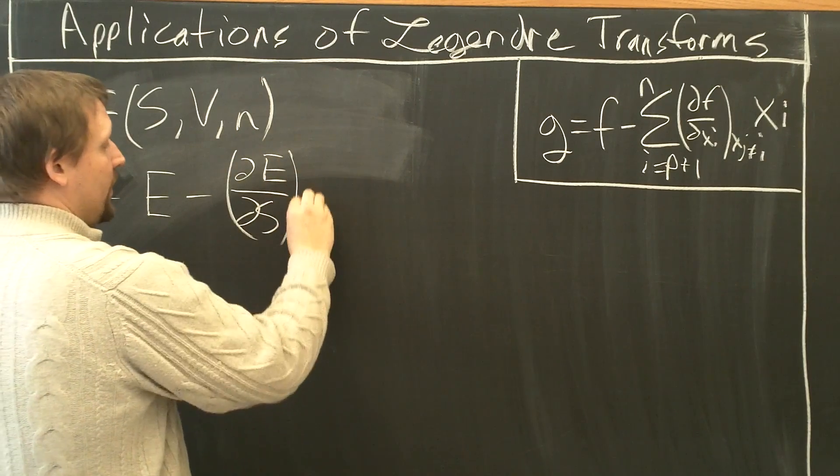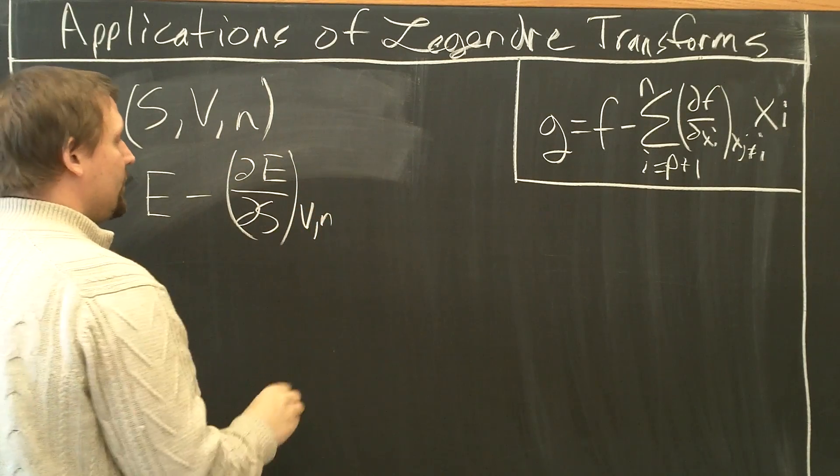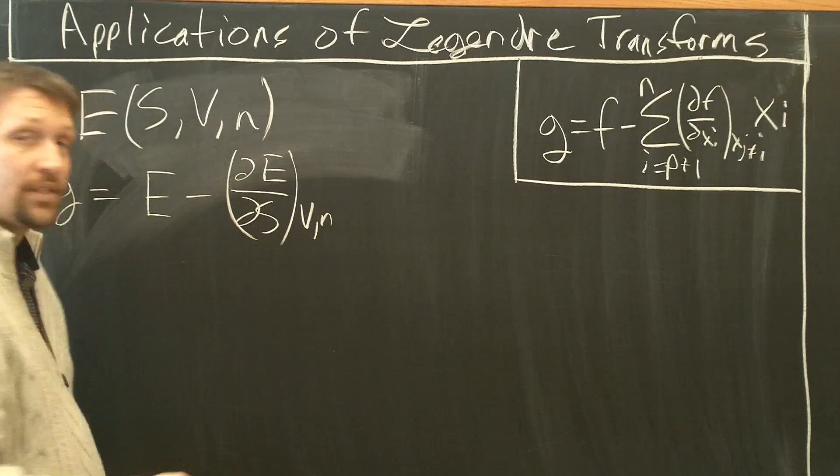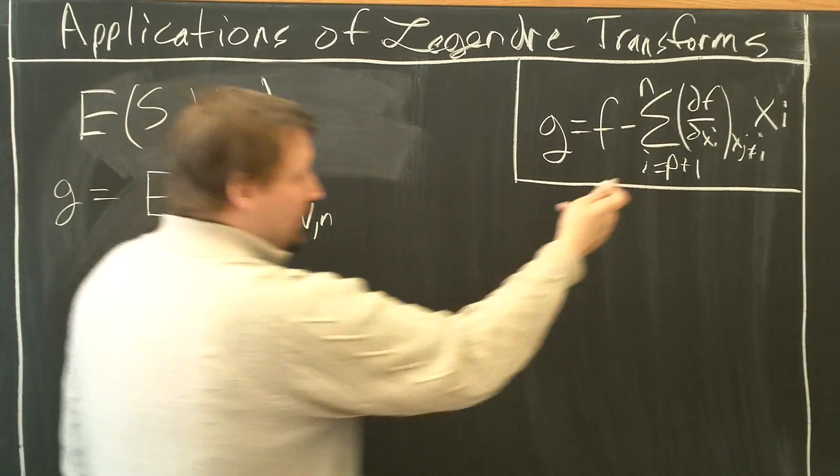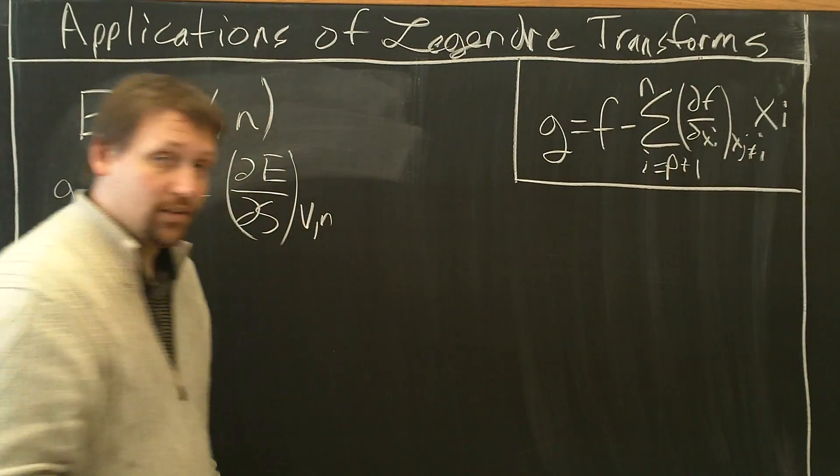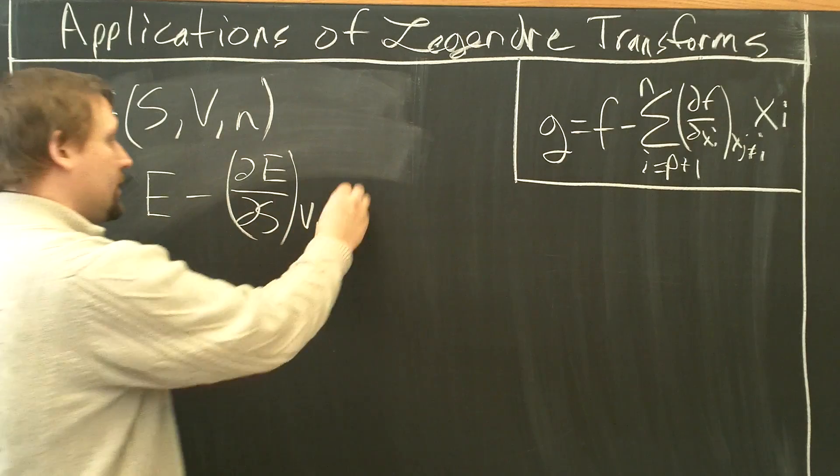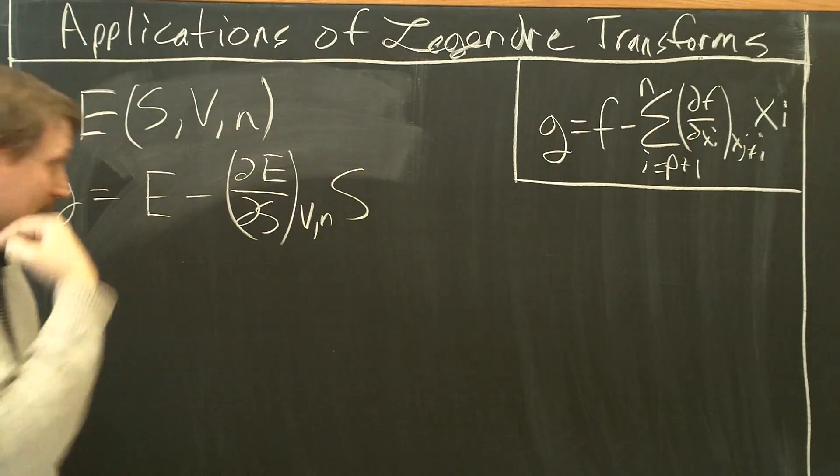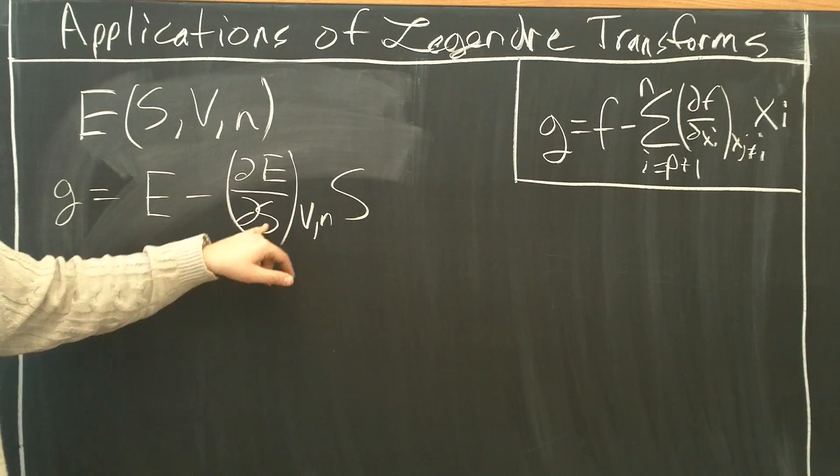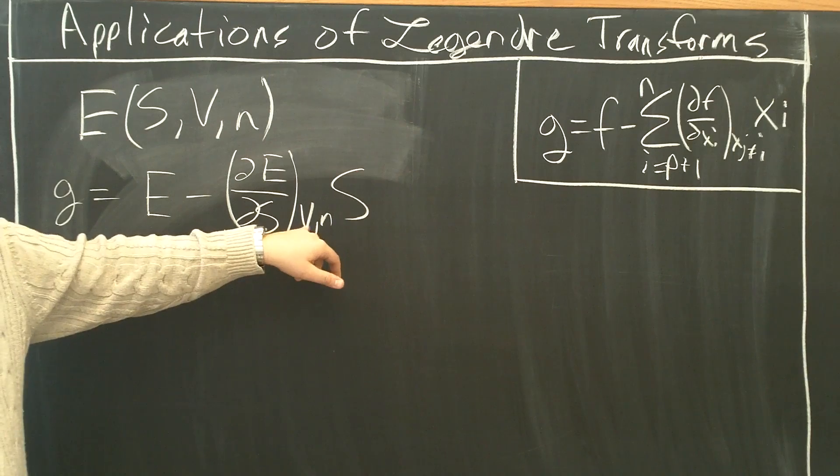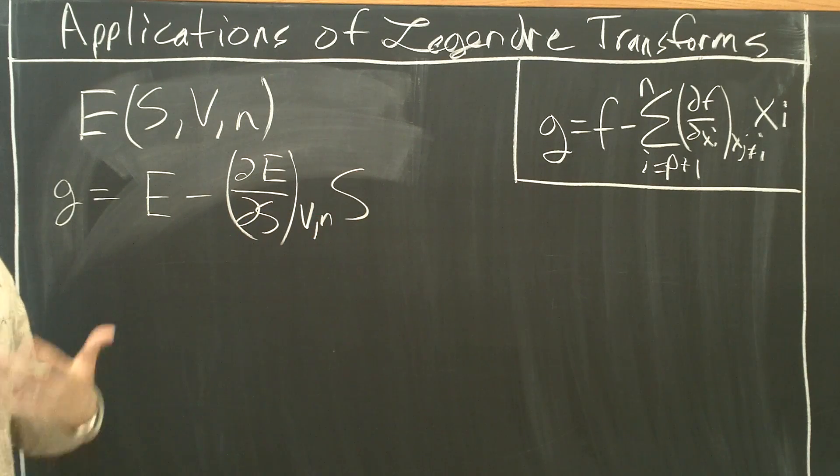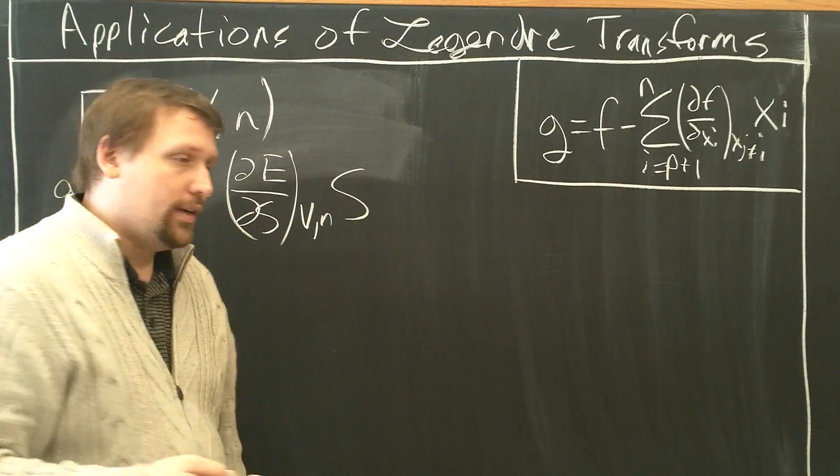everything else kept fixed, which would be V and N in this case, times the Xi, which we're taking Legendre Transform with respect to, which is S. So, what is this new function in this instance?